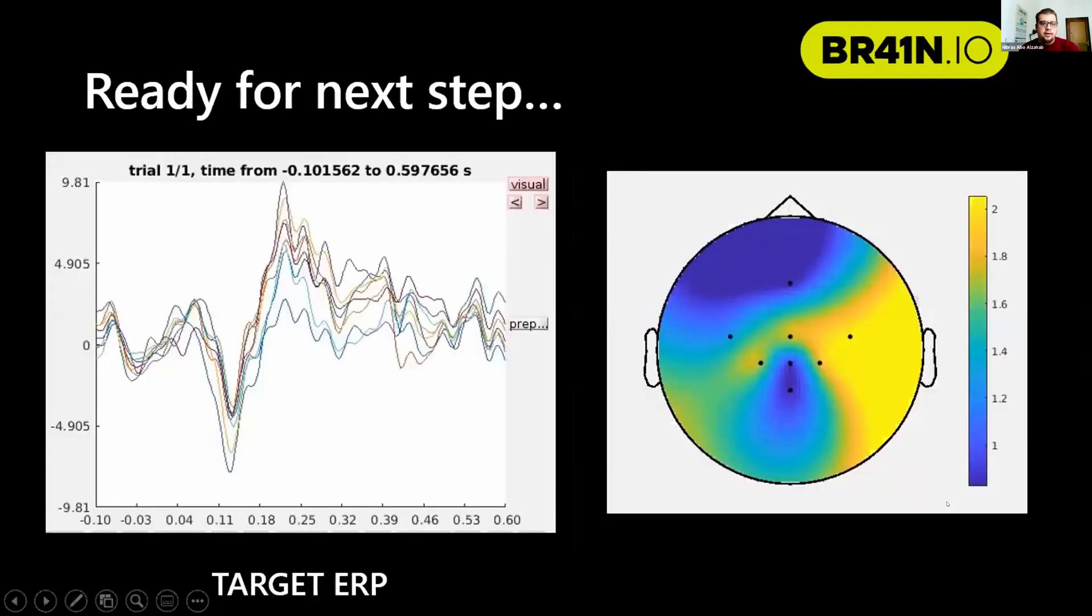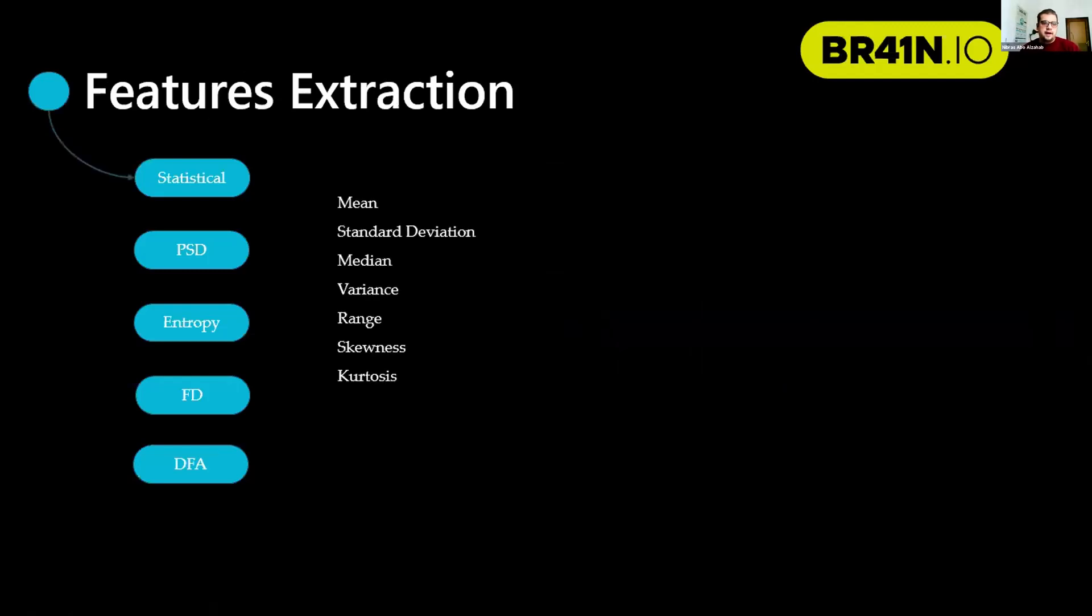Now our data is ready for the next step, which is feature extraction. For feature extraction, we use five categories of features: statistical features, power spectral density-based features, and entropy features, which include permutation, spectral, singular value decomposition, approximate, and sample entropy.